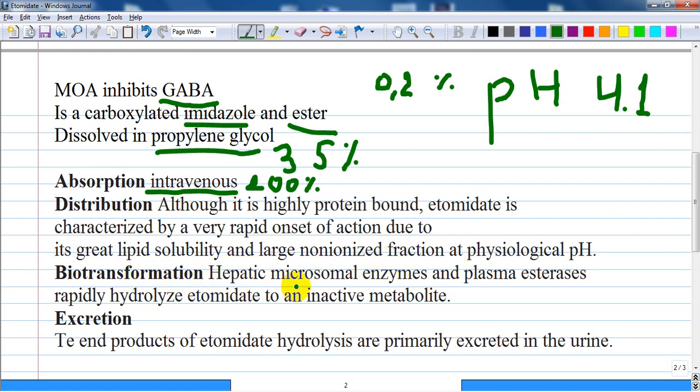Biotransformation occurs in hepatic microsomal enzymes and in plasma esterases which rapidly hydrolyze etomidate to an inactive metabolite. The end products of etomidate hydrolysis are primarily excreted in the urine.